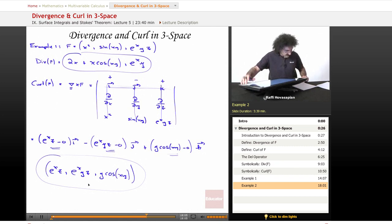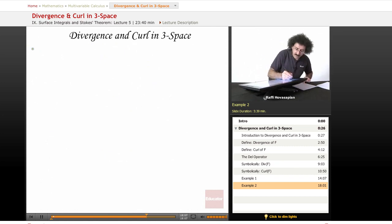Okay, let's do another example. So example two. F of x, y, and z is equal to x squared yz, x y cubed z, and x y z to the fourth.